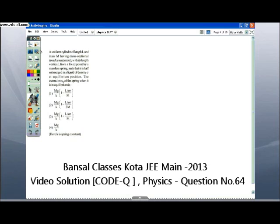The fourth question of Code Q says, a uniform cylinder of length L and mass M having cross sectional area A is suspended with its length vertical from a fixed point by a massless spring such that it is half submerged in a liquid of density sigma at equilibrium position. The extension X naught of the spring when it is in the equilibrium position. Let us see that there is a spring which connects to a cylinder which is partially dipped in a liquid. Now, in this situation, the liquid is going to exert a buoyant force and the spring is going to exert a spring force which will balance the weight of this thing.